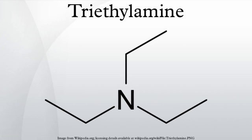Synthesis and properties: Triethylamine is prepared by the alkylation of ammonia with ethanol: NH3 + 3 C2H5OH → N(C2H5)3 + 3 H2O. The pKa of protonated triethylamine is 10.75, and it can be used to prepare buffer solutions at that pH. The hydrochloride salt, triethylamine hydrochloride, is a colorless, odorless, and hygroscopic powder, which decomposes when heated to 261 degrees Celsius.